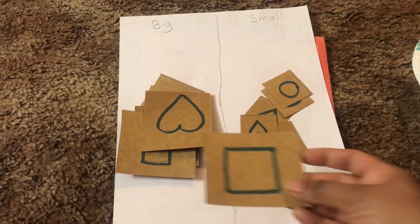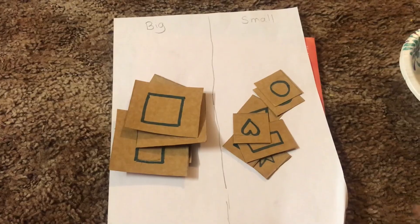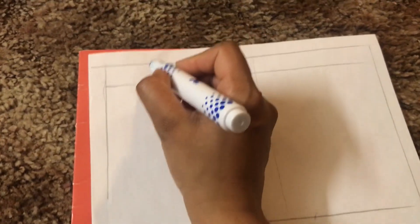Or you can simply ask learners to put or sort out big shapes into the bigger column and the small shapes into the smaller column. With that being said, parents, let's move on to our next exercise, that is comparing length from long and short.